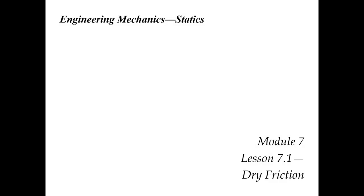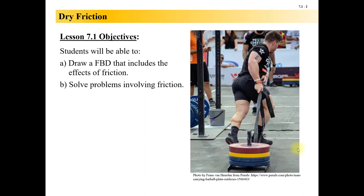Alright, Module 7, the last module. Lesson 7.1, Dry Friction. Lesson 7.1 Objectives: We're going to be able to draw a free-body diagram that includes the effect of friction, and then solve problems involving friction. So we're doing the same stuff we've done before, we're just adding friction into the mix.